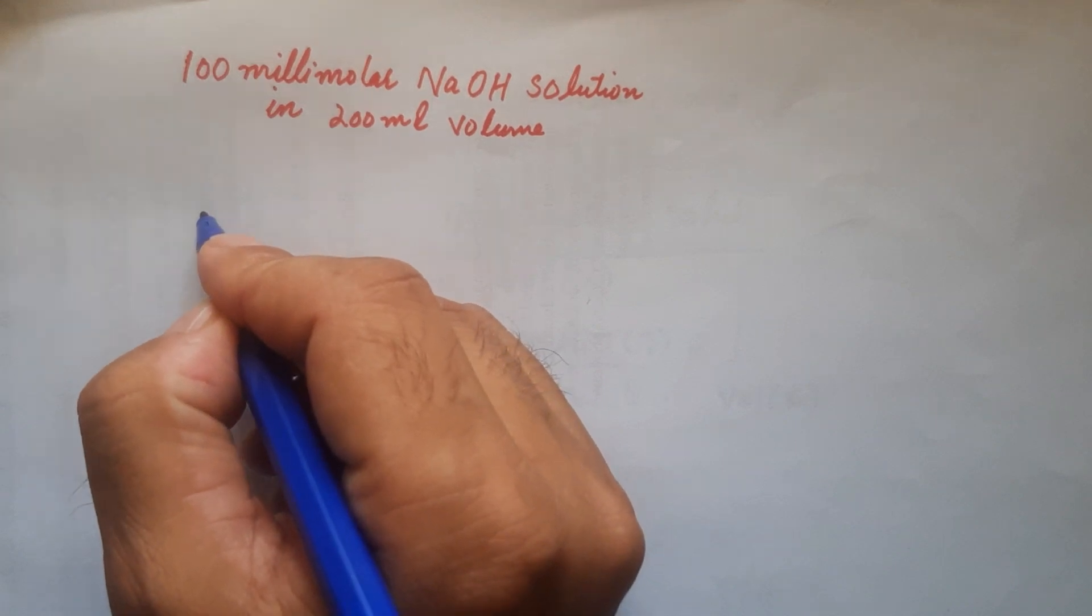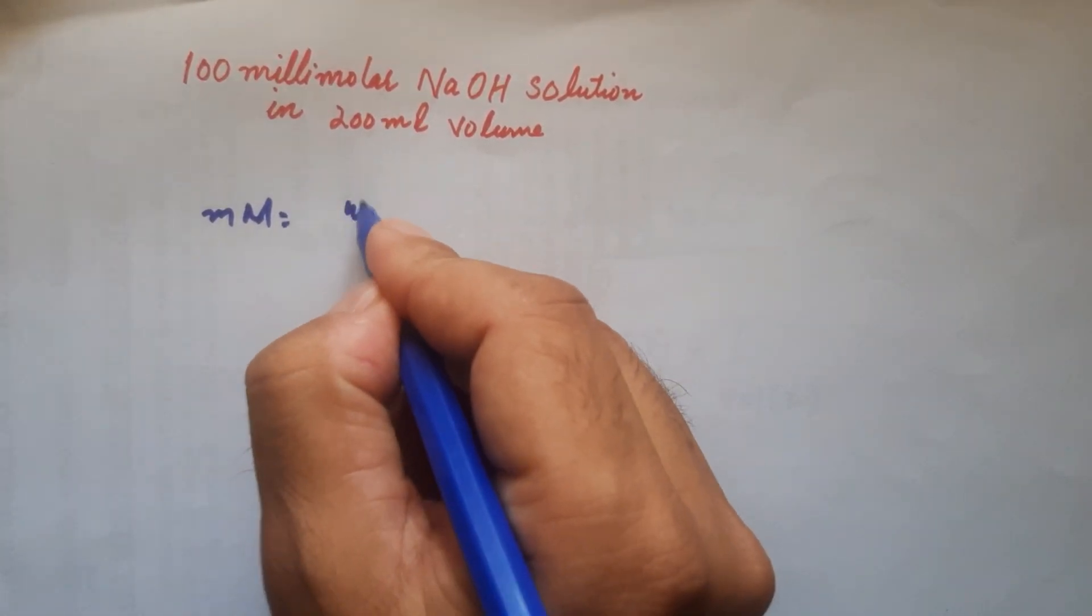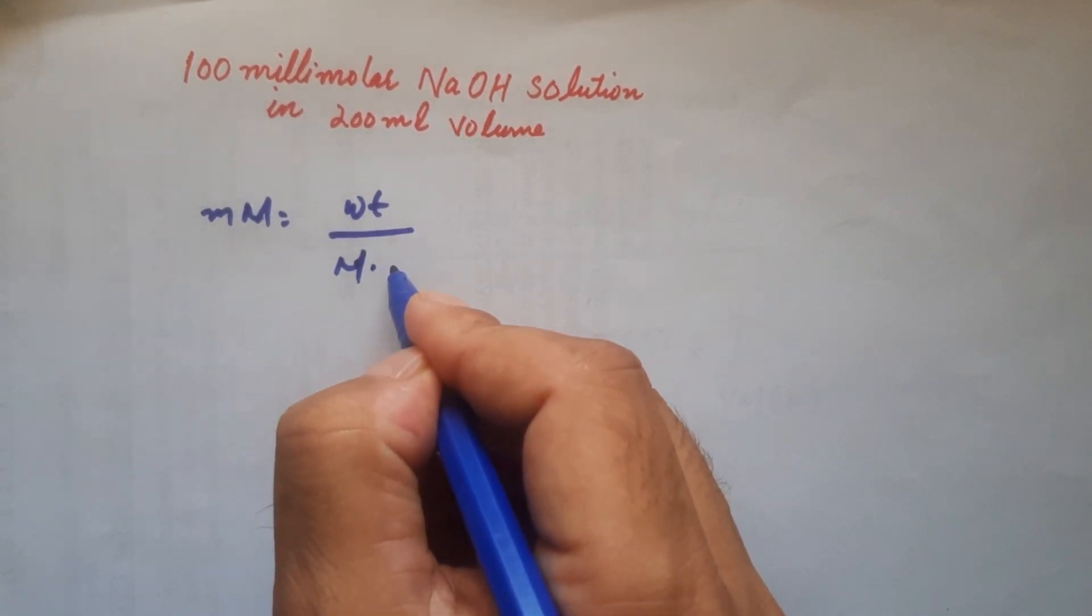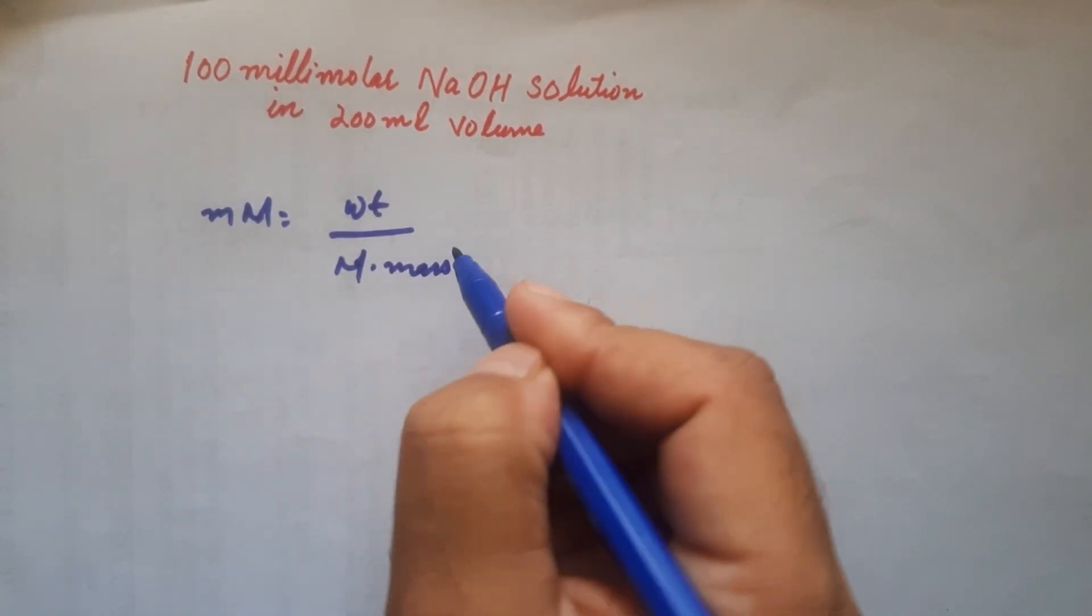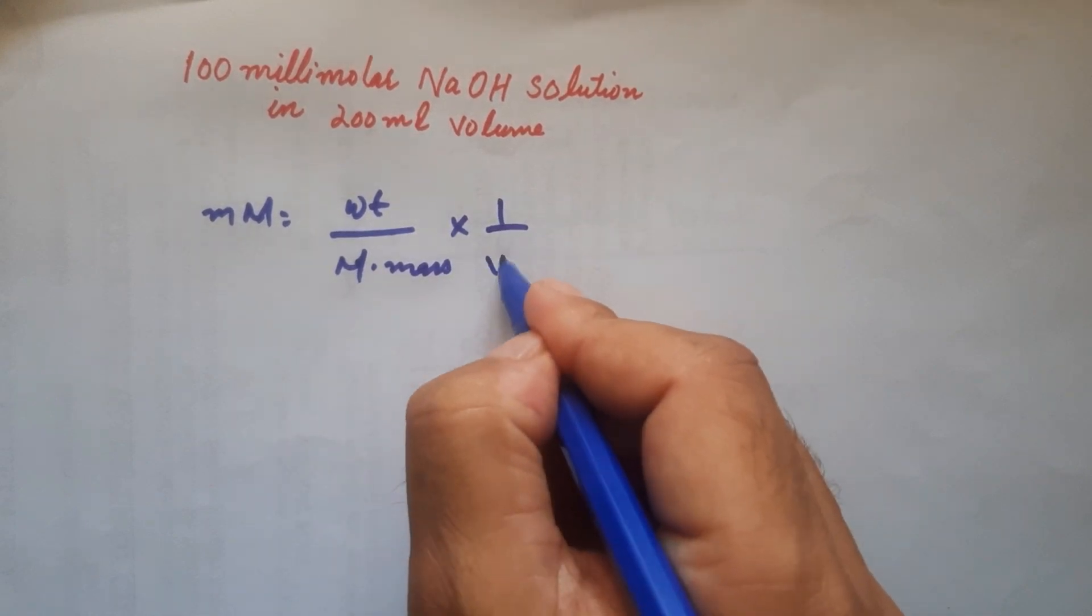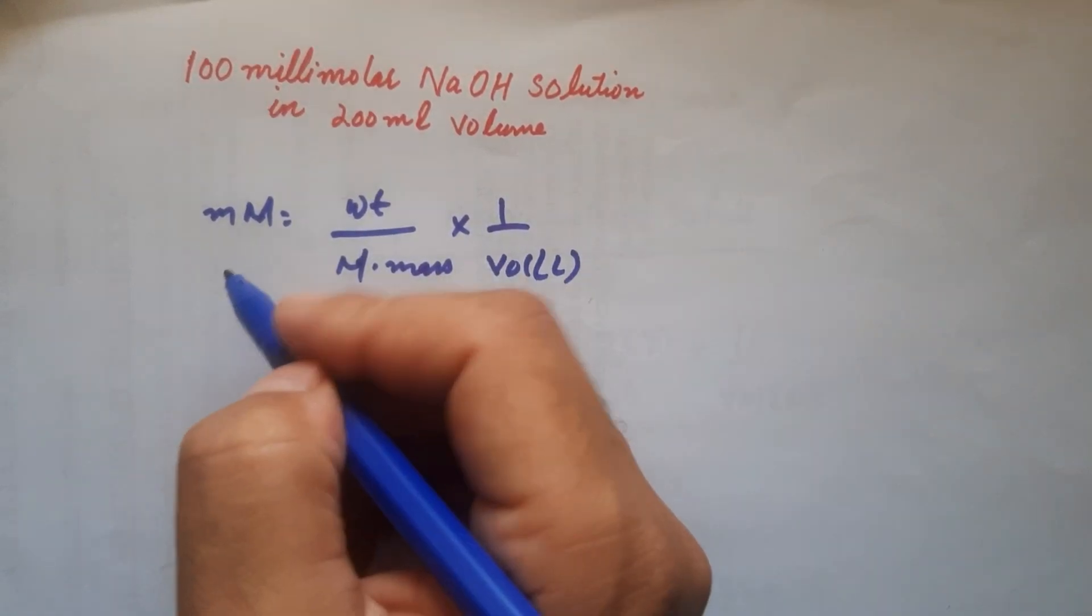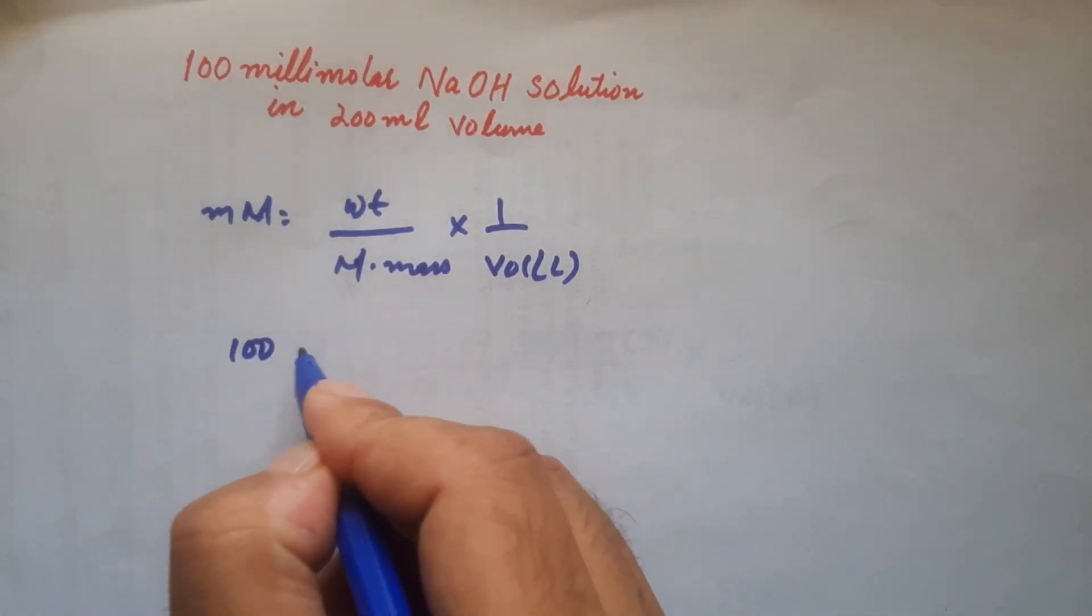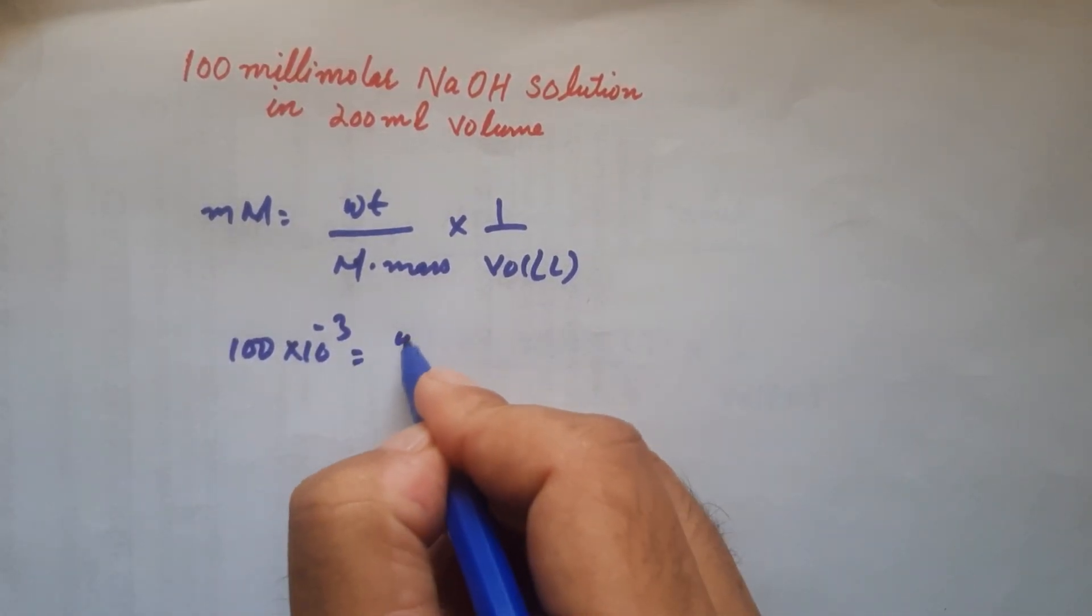Again, millimolar solution equals weight over molar mass times 1 over volume in liter. Now we simply need to put in everything. 100 millimolar times 10 to the power minus 3 equals weight...